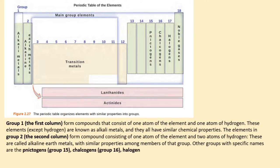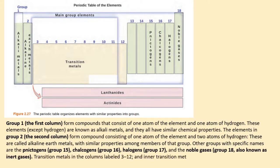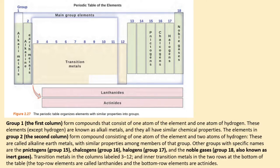Other groups with specific names are the pnictogens, group 15, chalcogens, group 16, halogens, group 17, and the noble gases, group 18, also known as inert gases. Transition metals in the columns labeled 3-12, and inner transition metals in the two rows at the bottom of the table. The top row elements are called lanthanides, and the bottom row elements are actinides.